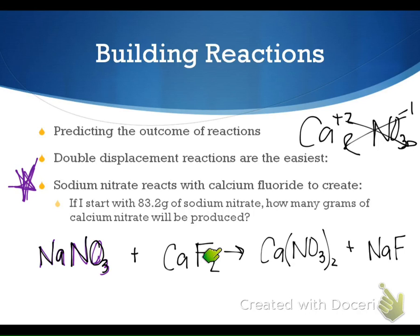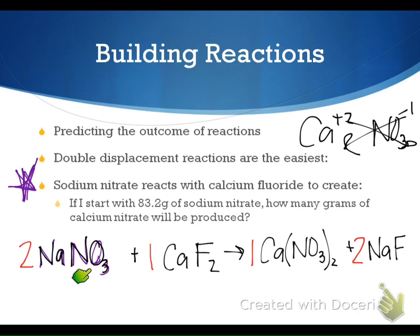Now we need to balance the equation. The balanced coefficients are 2, 1, 1, 2. We have two sodiums on each side, two nitrates on each side, two fluorines on each side, and one calcium on each side. Looks good.